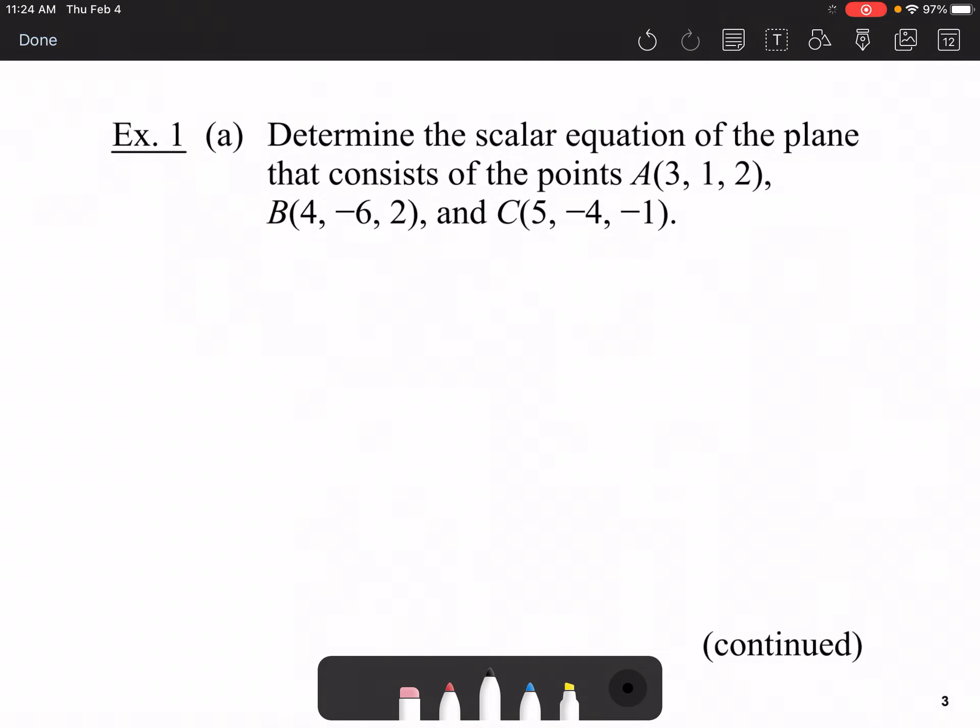We're going to determine the scalar equation of a plane that consists of the points 3, 1, 2, 4, negative 6, 2, and 5, negative 4, 1. To do this, we're going to first put it in partly vector form. So what I suggest right now is find two vectors that have a direction. Maybe to help us out, we'll go with the direction for vector A, or our first point, as we're going to take the vector BA. And for our second one, we'll find the vector CB. So, pause the video at this moment and work these two vectors out.